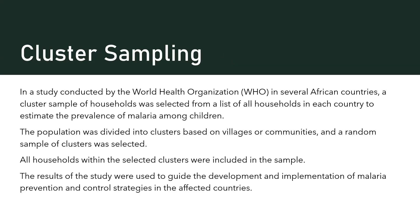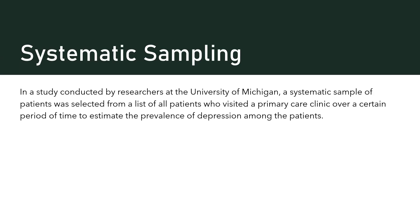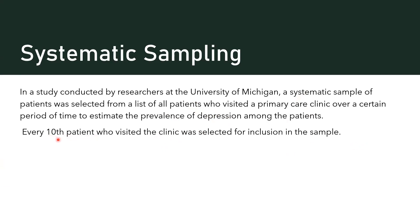To get n for the nth individual, we take the population divided by the desired sample size. Here's an example: researchers at the University of Michigan selected a systematic sample of patients from a list of all patients who visited a care clinic, to study the prevalence of depression. They took every 10th patient who visited the clinic and included them in their sample.